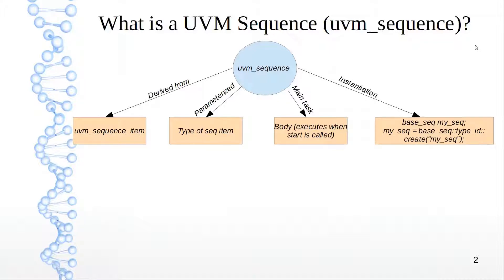Here I'm giving you an example of how a sequence is instantiated. You have your base sequence, which is the name of the class that extends from a UVM sequence. This is the instance name, and we are using create here instead of new to leverage the UVM factory capabilities. The UVM factory is a glorified lookup table that has all different sequences, components, objects, and component types.